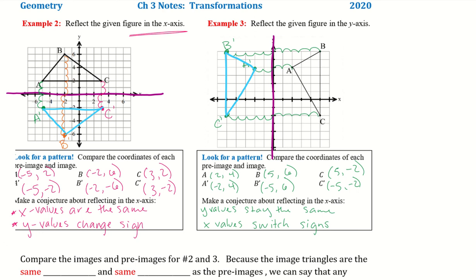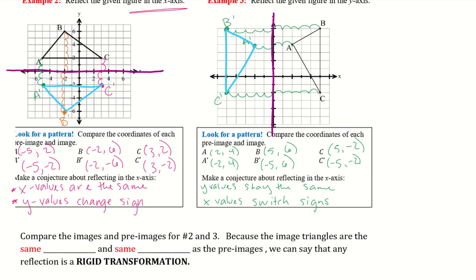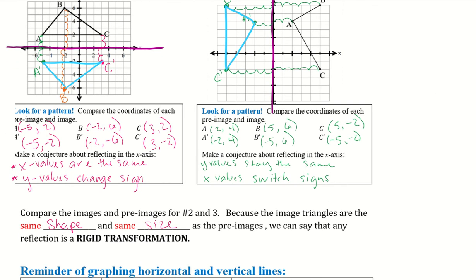If we are reflecting over either one of the axes, we'll have either the same X or the same Y, depending on whether you're flipping over the X or the Y axis. Because the image triangles are the same shape and the same size as the pre-images, we can say the reflection is a rigid transformation. If a transformation creates the same shape and same size, it is considered a rigid transformation.